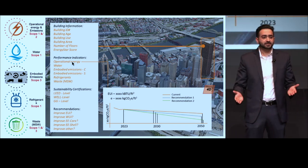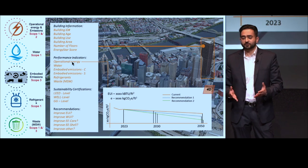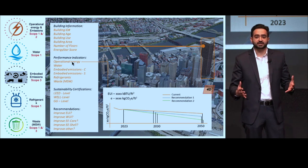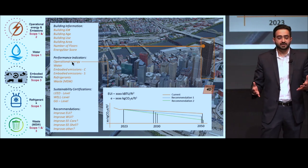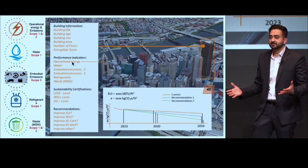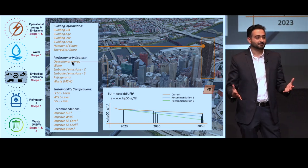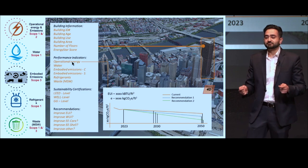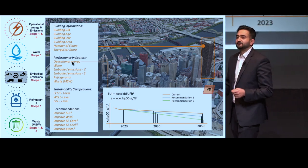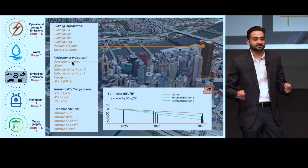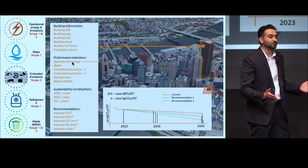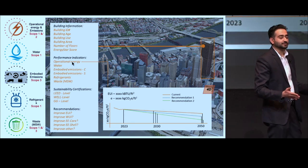Moreover, higher population in urban areas calls for construction of larger, more complex buildings that require huge amounts of energy and critical resources like water and construction materials to operate efficiently. It is for this reason why it's important to not only measure and benchmark, but also actively improve the performance of our existing urban buildings.